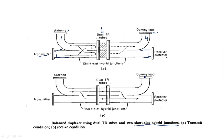The short slot hybrid junction is used to couple power from one waveguide to another waveguide. The TR tubes are inserted at the center of these two waveguides — one TR tube in each waveguide. This completes the construction of the balanced type duplexer.